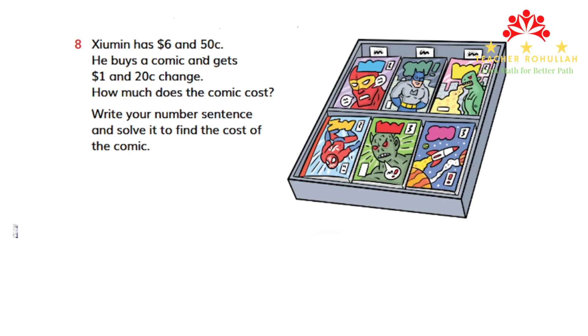This exercise is about adding and subtracting money. Question 8 says: Xiu Min has six dollars and fifty cents. He buys a comic and gets one dollar and twenty cent change. How much does the comic cost?